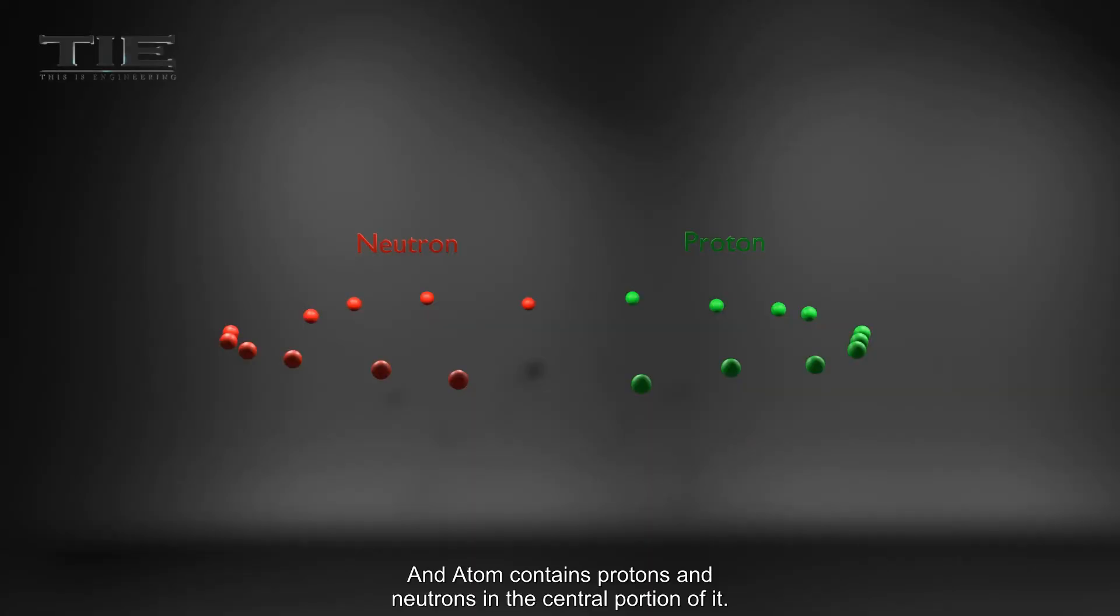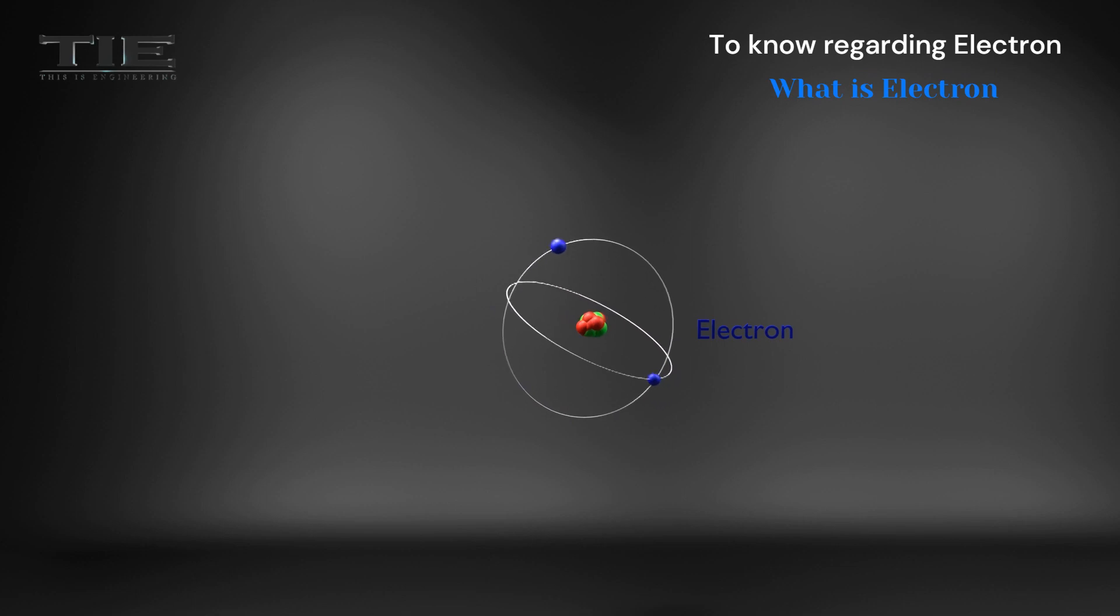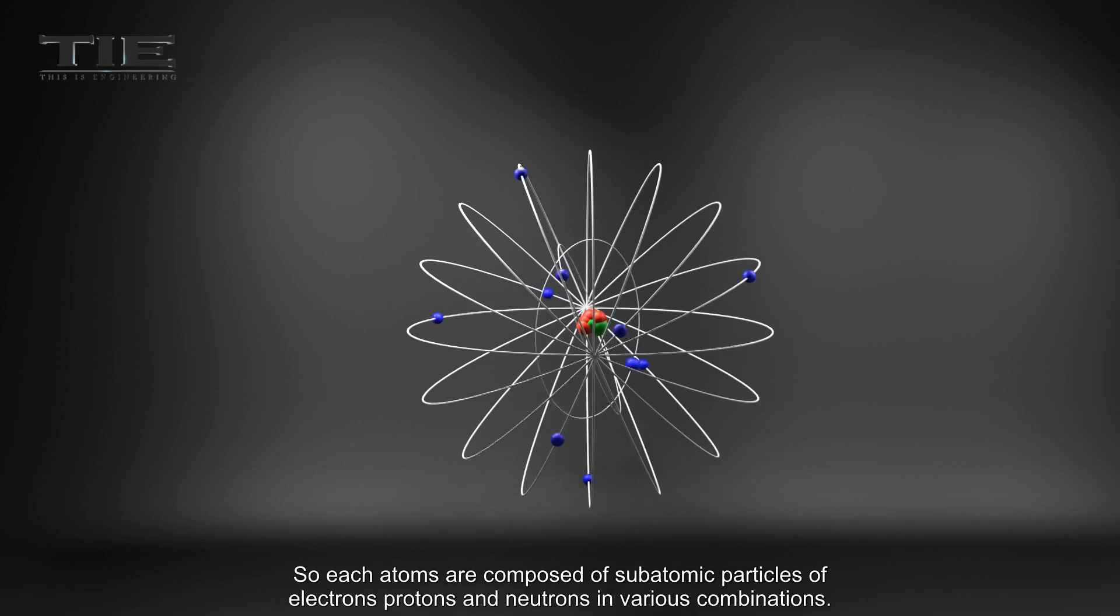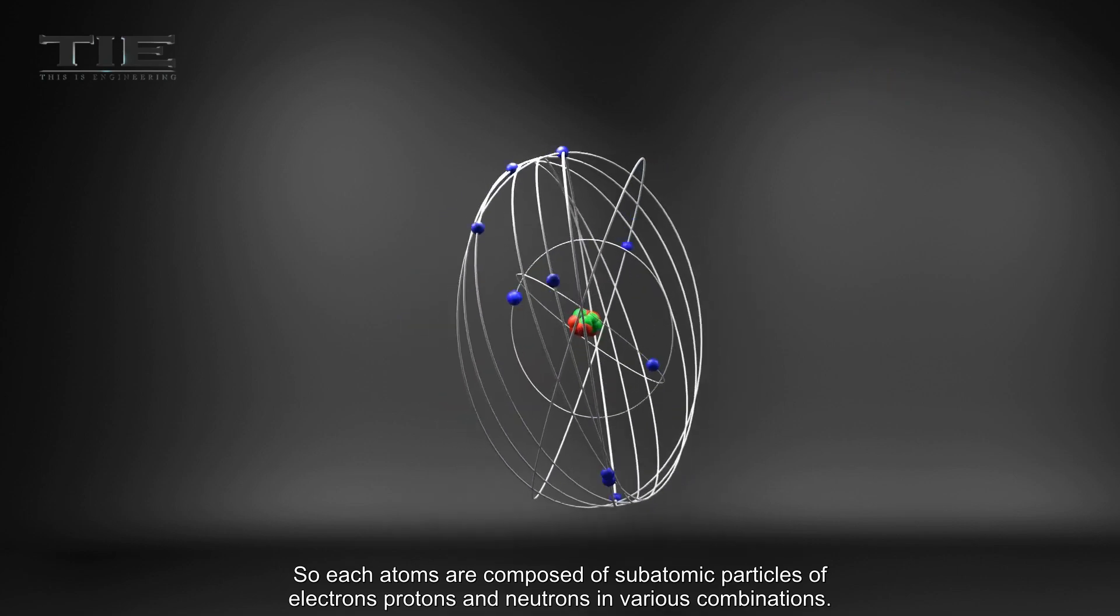An atom contains protons and neutrons in the central portion of it. Around these, there are a number of electrons revolving in orbits. So, each atom is composed of subatomic particles of electrons, protons, and neutrons in various combinations.